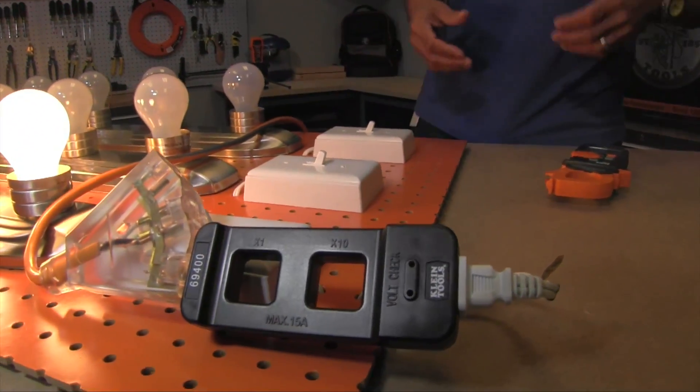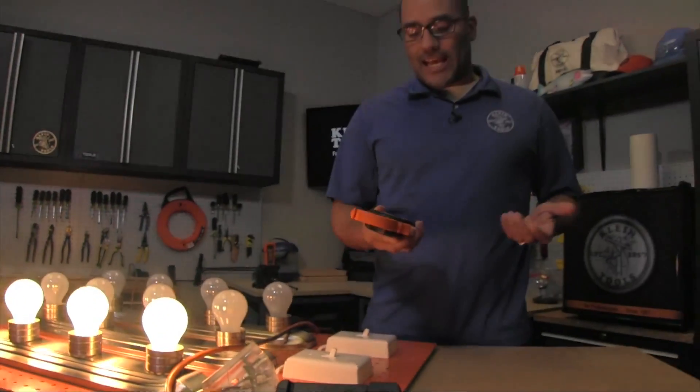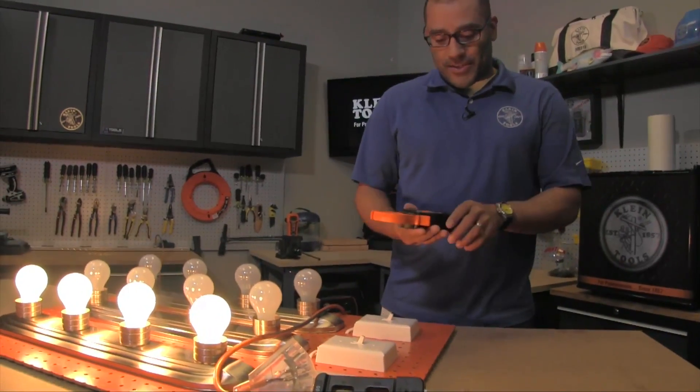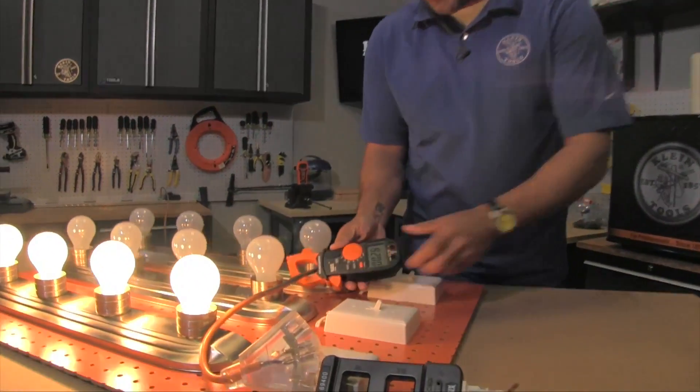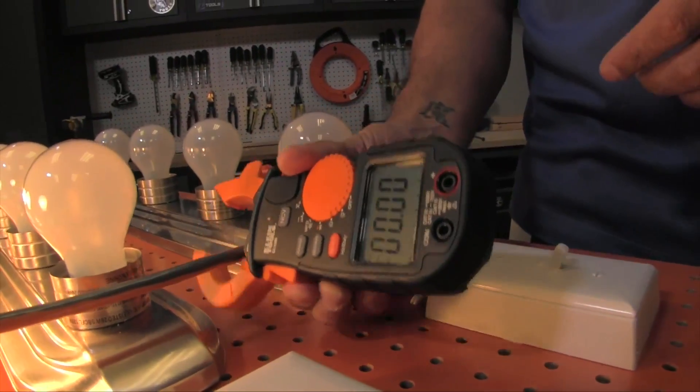If you wanted to check the amperage of this bank of lights that I have lit right here and you wanted to use a clamp meter, you would think just clamp on to this and you get your amperage reading. What you'll see is that you actually don't get a reading at all. The reason for this is that